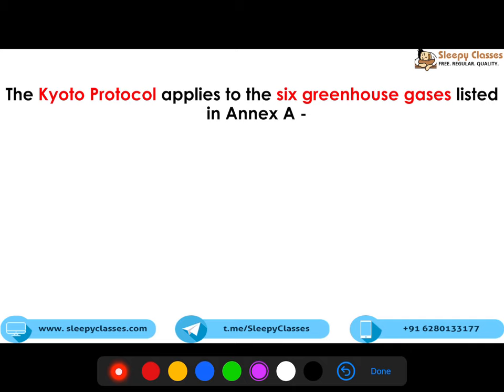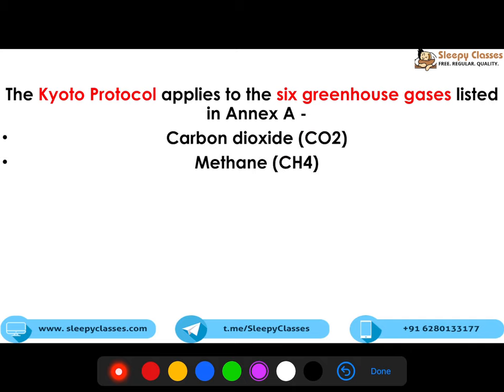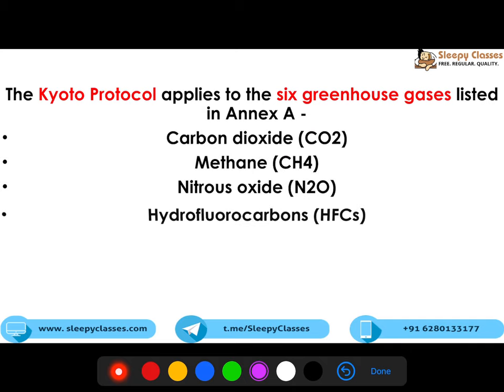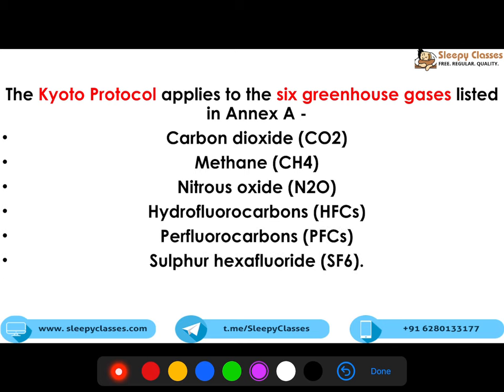The six greenhouse gases listed in Annex I of the Kyoto Protocol are: carbon dioxide, methane, nitrous oxide, HFCs, PFCs, and SF6. Styrene has nothing to do with greenhouse gas potential — it is completely unrelated, so don't get confused.